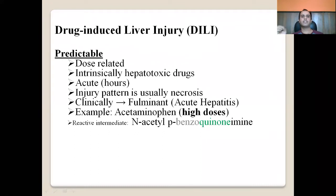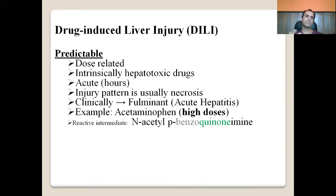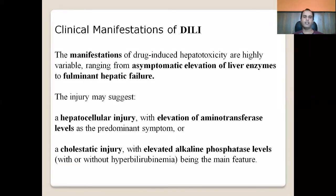Predictable hepatotoxicity is dose-related. At therapeutic doses, hepatic injury is not expected, but at higher doses it is predicted. It occurs with intrinsically hepatotoxic drugs and may be seen within hours. The injury pattern is usually necrosis; clinically, fulminant acute hepatitis can be seen. The classic example is acetaminophen at high doses, which produces the reactive intermediate N-acetyl-para-benzoquinone imine (NAPQI), known to cause hepatic injury.